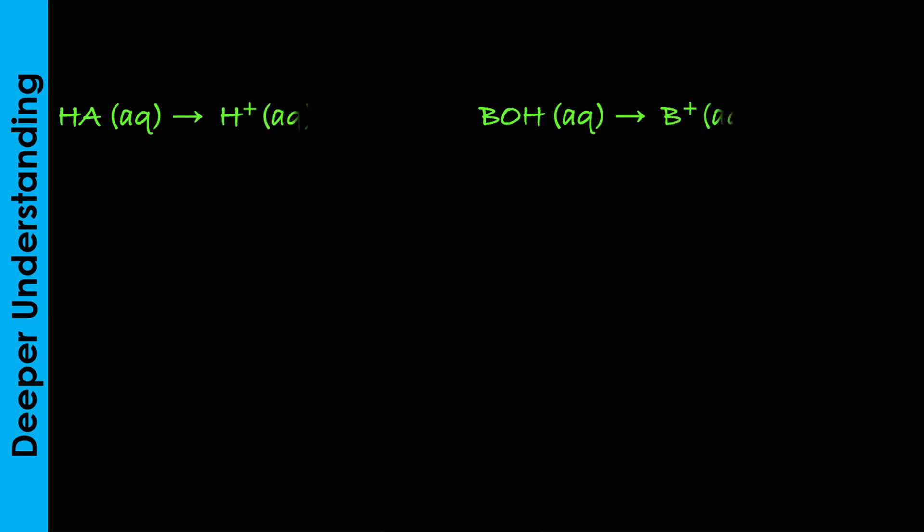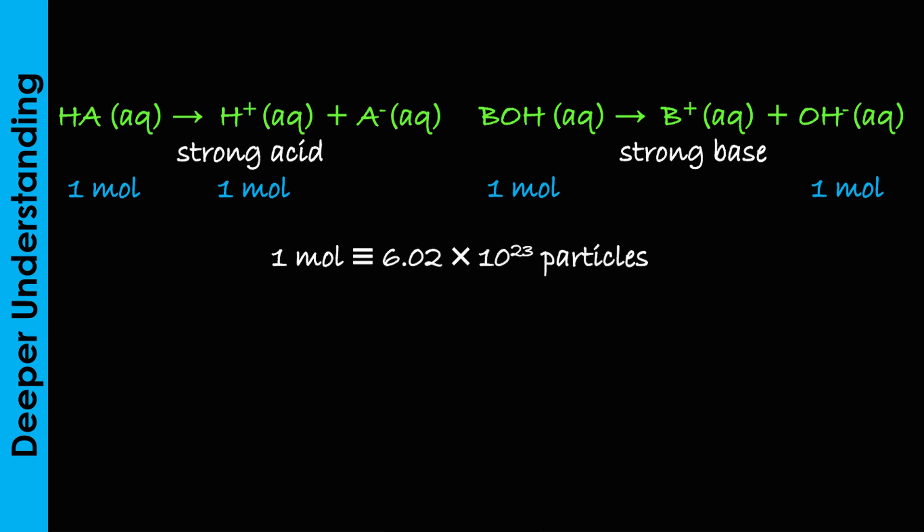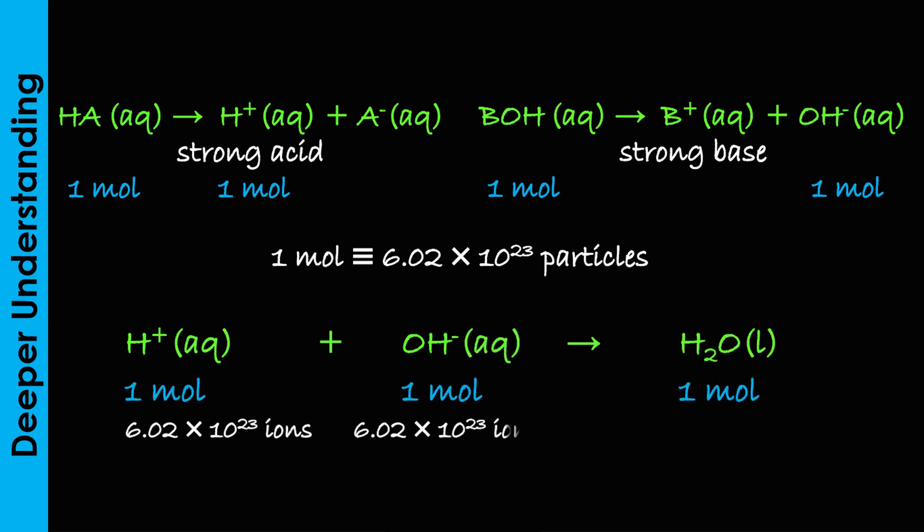Since a strong acid or base undergoes complete ionization, therefore, one mole of the monobasic acid will produce the Avogadro's number of hydrogen ions in solution, same with the base. So, when the strong acid and base react, they will produce an Avogadro's number of water molecules, which is a constant.